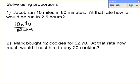The second part says, at that rate, how far would he run in 2.5 hours? We're trying to find how far, so that's our variable, and it goes on top because miles is how far — x and miles should both be in the numerator. The denominator should be time, but we don't want to write 2.5, because 2.5 is in hours while the 80 is in minutes.